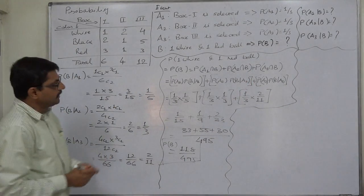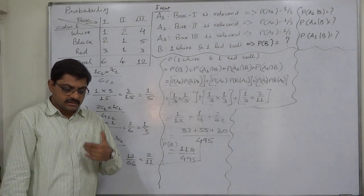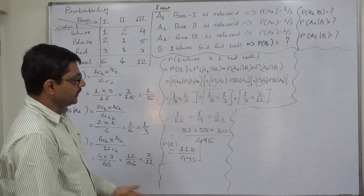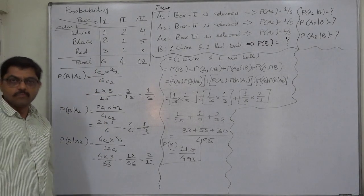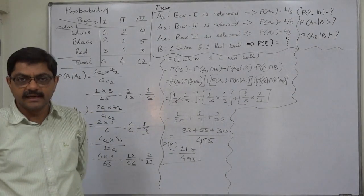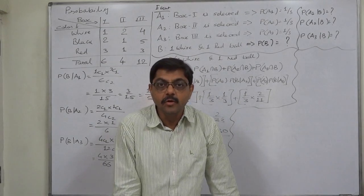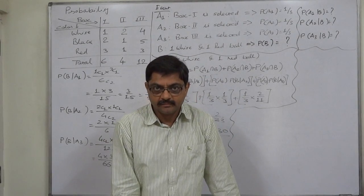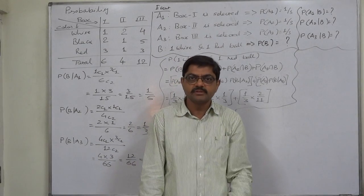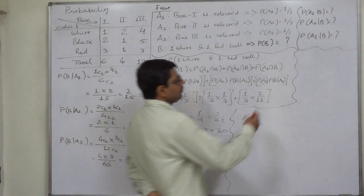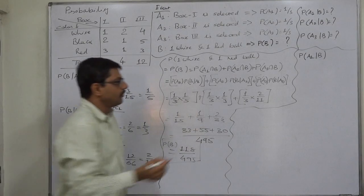Now the second part — the revised probability of A1, A2, or A3 — also known as inverse probability. From this situation, a box is selected at random and two balls from the selected box happen to be one white and one red. What is the probability that they came from the first box, second box, or third box? We now know that event B has happened. We want to calculate P(A1|B) — the probability of selection of the first box given one white and one red ball was selected.